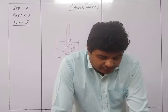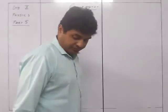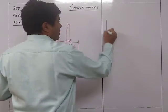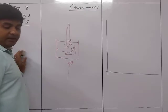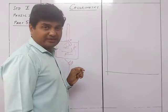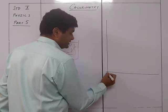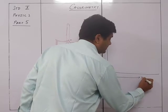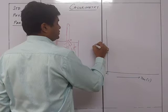Now let's see the heating curve of ice during melting. I have a graph with temperature on the y-axis — showing zero degrees Celsius — and time in seconds on the x-axis. This represents how the temperature changes as ice is heated over time.